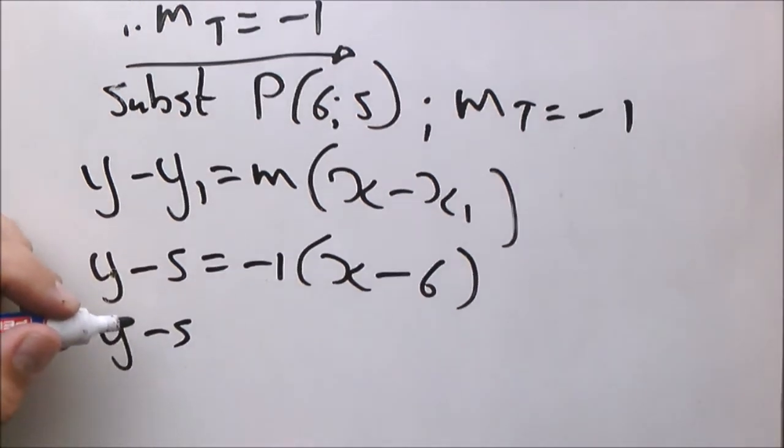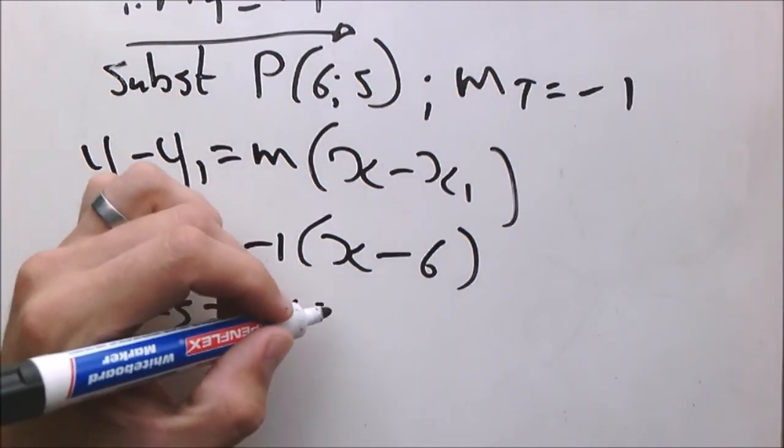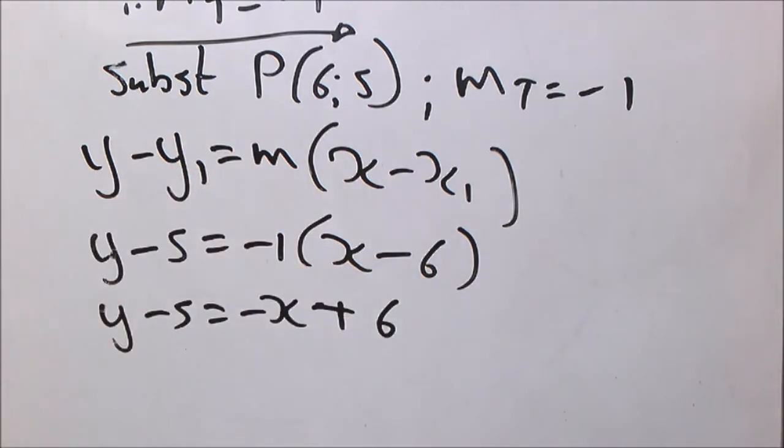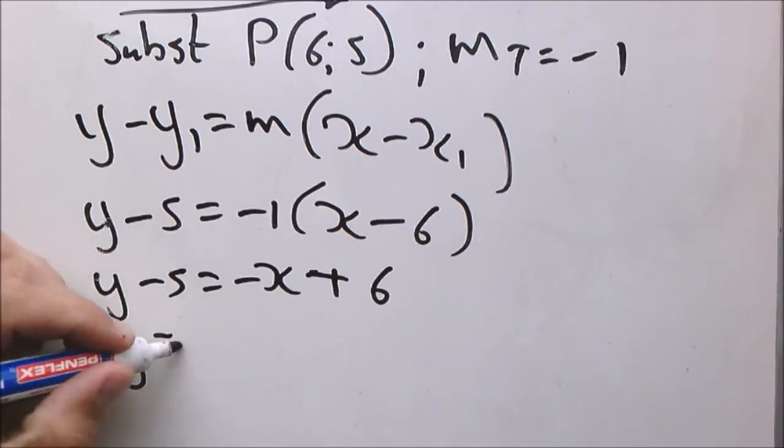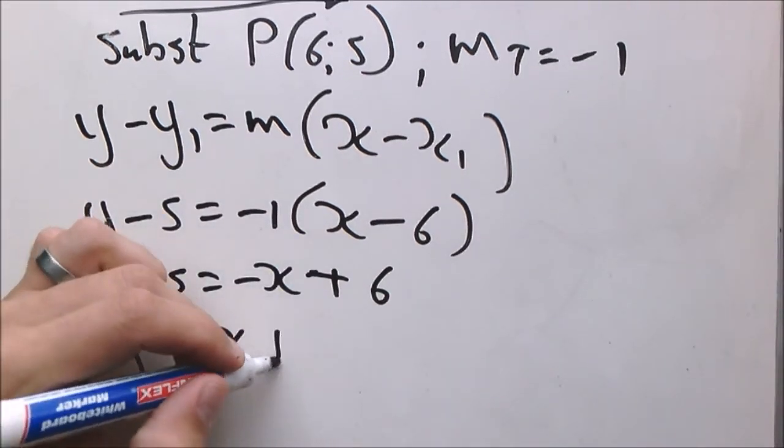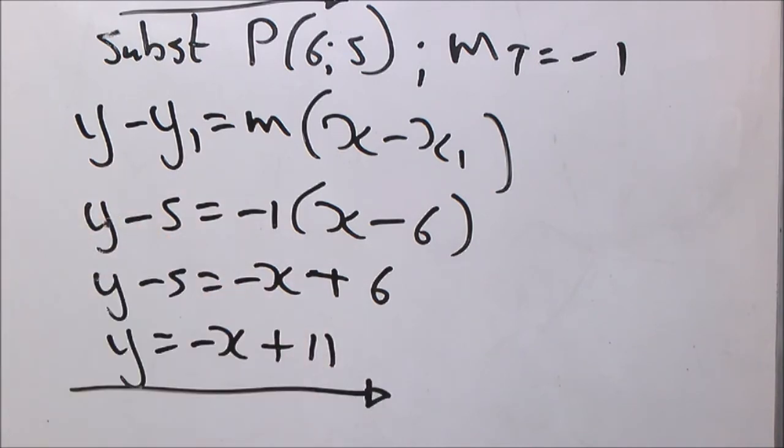We multiply into the bracket and then simplify. And that's your final answer.